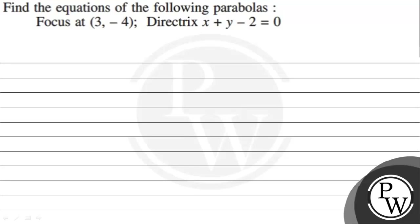Let's read the given question. Find the equation of the following parabola with focus at (3, -4) and directrix x plus y minus 2 equal to 0.